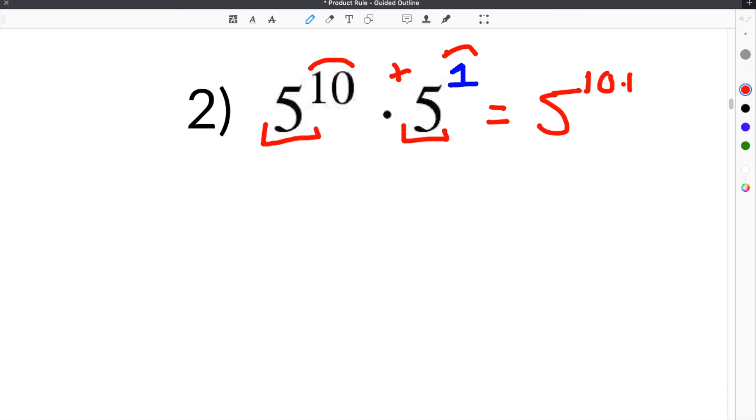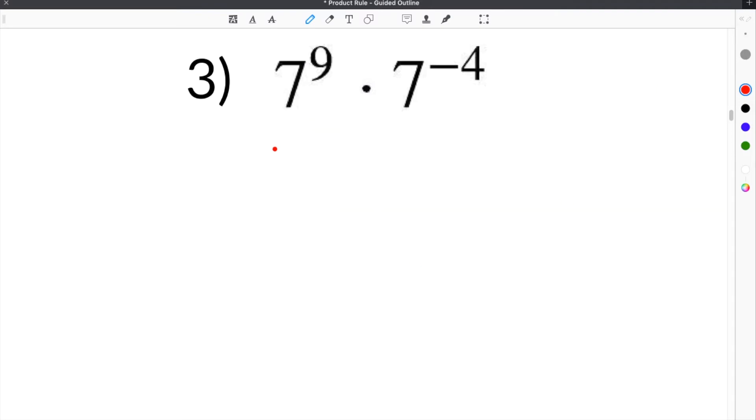It would be 5 to the 10 plus 1, which, of course, is 5 to the 11th. Jumping down to number 3, we have 7 to the ninth times 7 to the negative fourth.